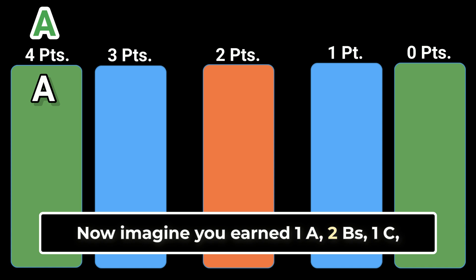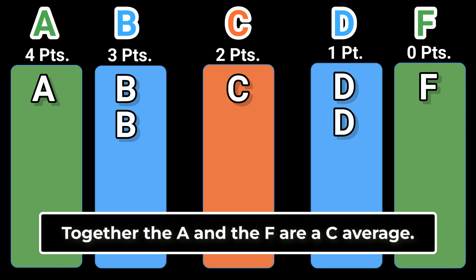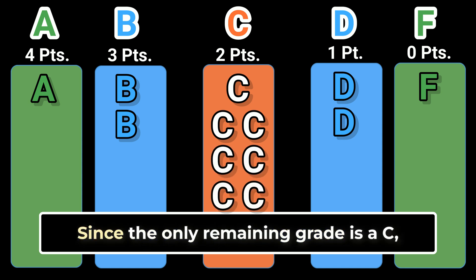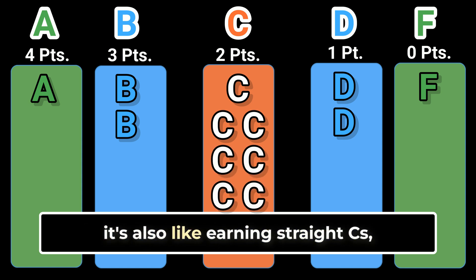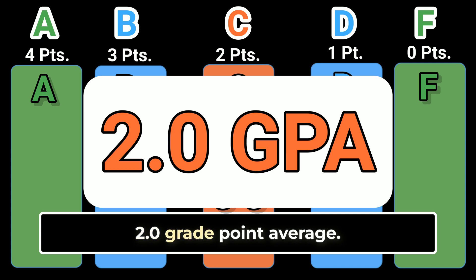Now imagine you earned one A, two B's, one C, two D's, and one F. Together, the A and the F are a C average. And together, the two B's and two D's are also a C average. Since the only remaining grade is a C, it's also like earning straight C's which would also be a 2.0 grade point average.